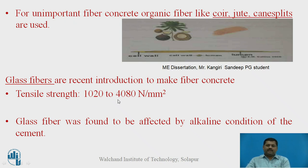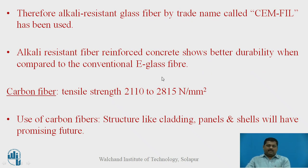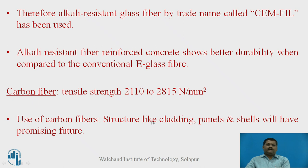Glass fiber is a more recent introduction to fiber reinforced concrete. Its tensile strength ranges from 1020 to 4080 N/mm², but glass fiber is affected by alkaline conditions, so alkali-resistant fibers are required. One trade name is 'Cemfil,' which is an alkali-resistant glass fiber. Carbon fiber has tensile strength of 2110 to 2850 N/mm² and is used mainly in cladding panels and shell structures; its mass-scale use holds promising future potential.